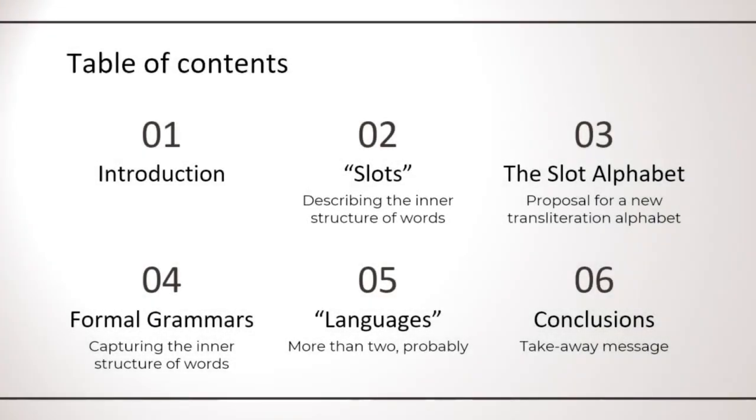In this presentation I will describe a concept I call slots, which I use to describe the inner structure of Voynich words. Then I will show a new transliteration alphabet I created based on this concept. Using this alphabet I built a formal grammar for Voynich words which has been used to produce some evidence about possible languages in the manuscript. Finally, I will summarize my conclusions.